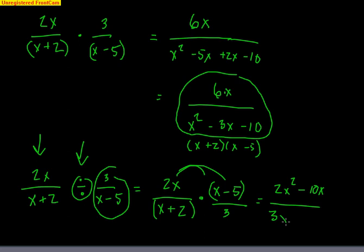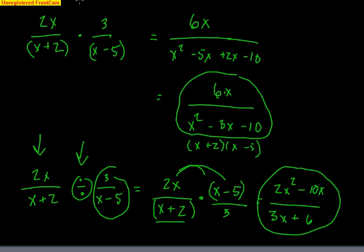There were no common factors — I would have noticed right away. Like if this was an (x minus 5) and this was an (x minus 5) right here, I could have canceled them out because they were common factors top and bottom. It didn't happen here, so this would be my final answer. So be careful: multiplication goes straight across top and straight across the bottom. Division — I'd rather change it to multiplication, but you've got to multiply by the reciprocal of the second rational function.